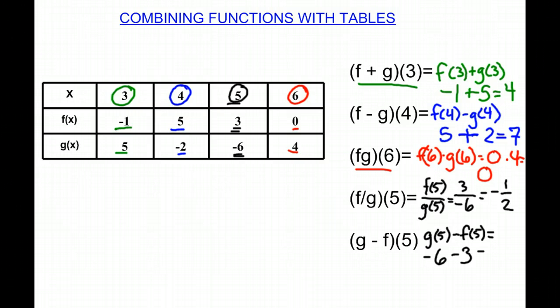So (g - f)(5) is negative 9. And that's how you combine functions with tables.